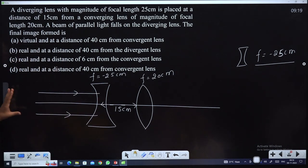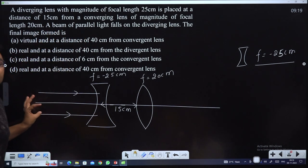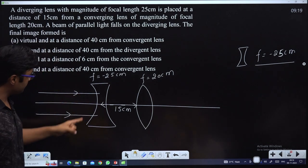Parallel light means the object is at infinity. Where is the image?